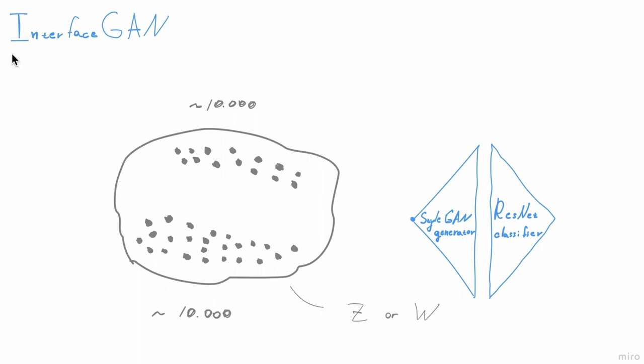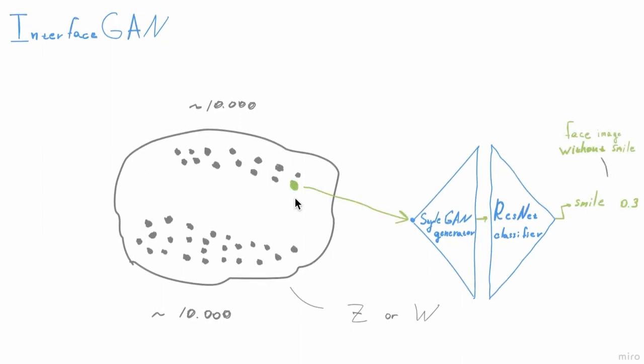Interface GAN belongs to the first type of methods that search for a global editing direction in latent space W or Z of StyleGAN. For example, we want to find a global editing direction for attribute smile. For that, we randomly sample in W space thousands of points. Then, from each sampled point in the latent space, we generate an image.